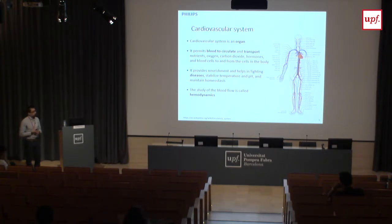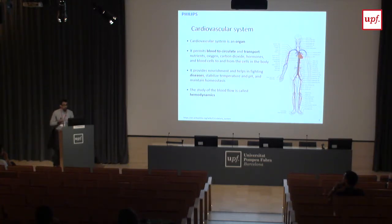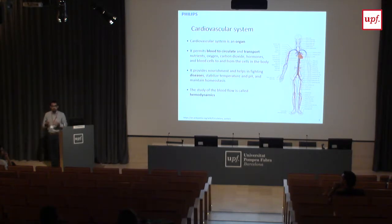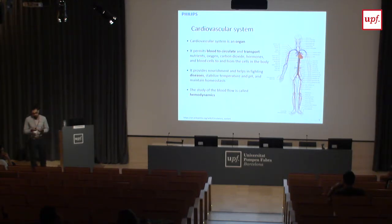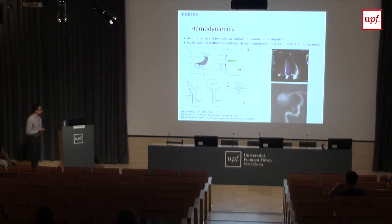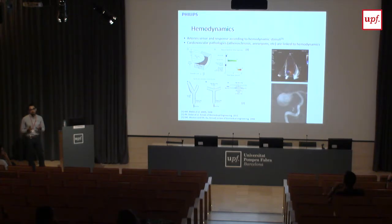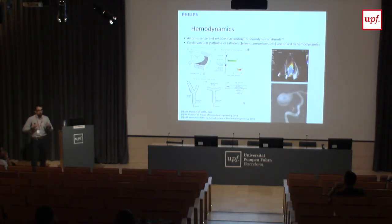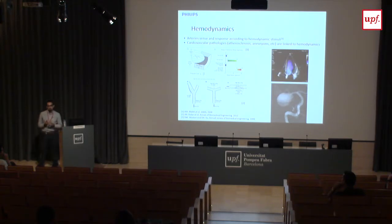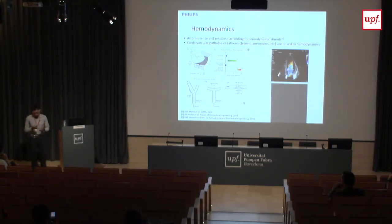As you have seen during this summer school, the cardiovascular system is an organ. The goal is to permit blood circulation and the transport of nutrients, oxygen, and waste throughout our body. It provides nourishment and helps fight disease. It maintains homeostasis. The study of blood flow is what we call hemodynamics. The arterial response to blood stimuli — for example, if I start running, muscles demand more blood, arteries react. It's also associated with disease, as we have seen with atherosclerosis, and I'm going to show you with a brain aneurysm.